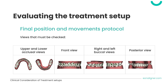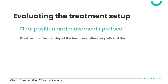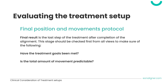Starting with checking the final result of the treatment — the last step after completion of alignment — this stage should be checked from all views to confirm treatment goals have been met, such as space closure, alignment, or overbite and overjet correction. It is also important to evaluate the total amount of movements achieved and whether they are predictable, taking into consideration bone support and periodontal health, especially in cases where expansion and proclination movements are planned.